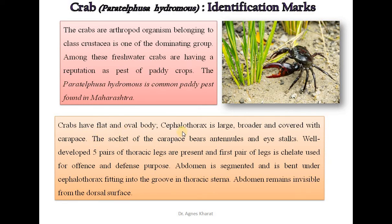Crabs have a flat and oval body. The cephalothorax is large, broader, and covered with a carapace. The socket of the carapace bears antennules and eye stalks. Well-developed 5 pairs of thoracic legs are present, and the first pair of legs is chelate, which is used for offense and defense purposes. The abdomen is segmented and is bent under the cephalothorax, fitting into the groove in the thoracic sternum. The abdomen remains invisible from the dorsal surface.